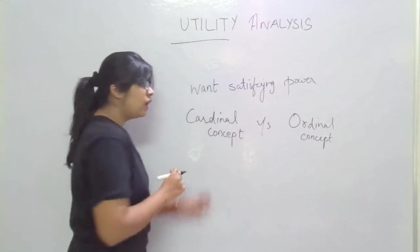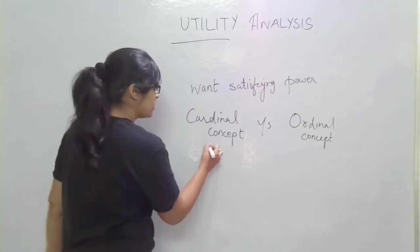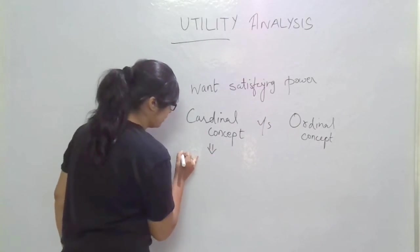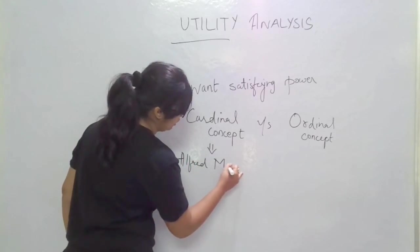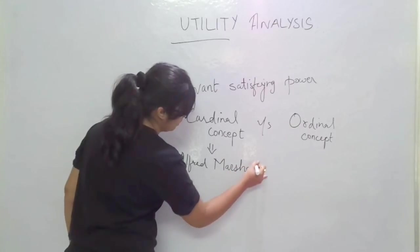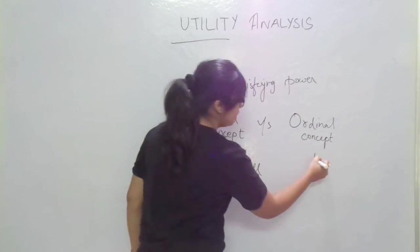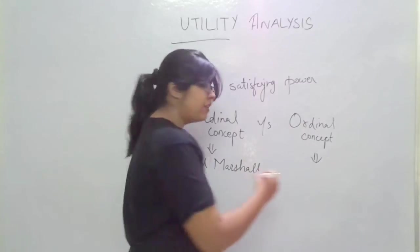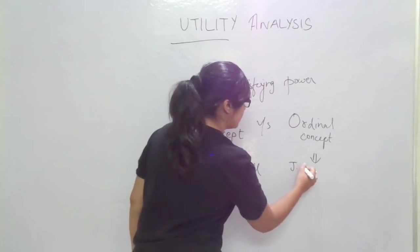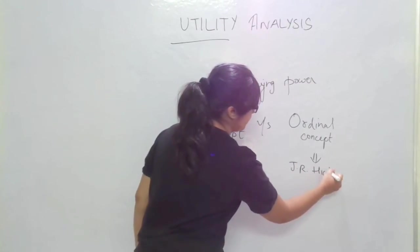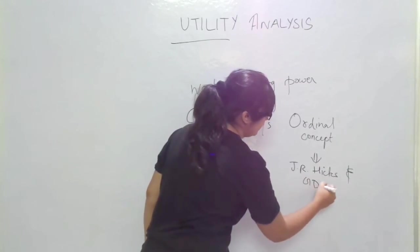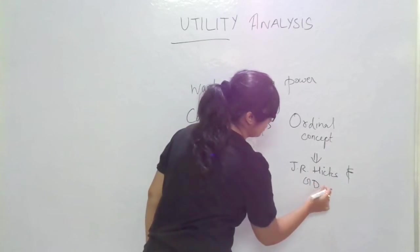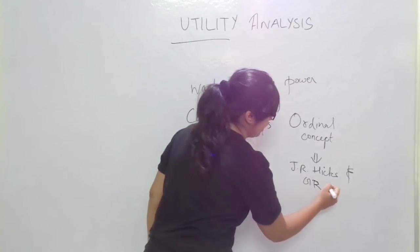Now cardinal concept was given by an economist known as Alfred Marshall. And ordinal concept was given by J.R. Hicks and G.R.D. Allen.